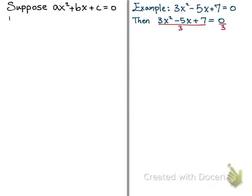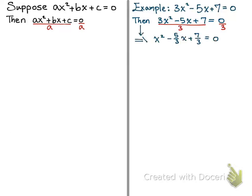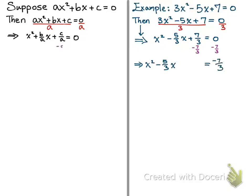The next step is to divide both sides by 3 in the specific case, or by a in the general case. On the right we get x squared minus 5 over 3 times x plus 7 thirds equals 0, and on the left we get x squared plus b over a times x plus c over a equals 0. Then we subtract 7 thirds (or c over a) from both sides.